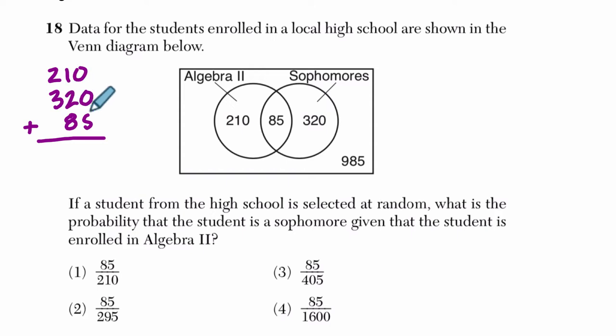Just to go back over that real quick, the 210, that's referring to this moon shape right here. So they're in algebra 2, but they're not in the intersection where there are sophomores, and the 320 is referring to this number, this moon shape right here.